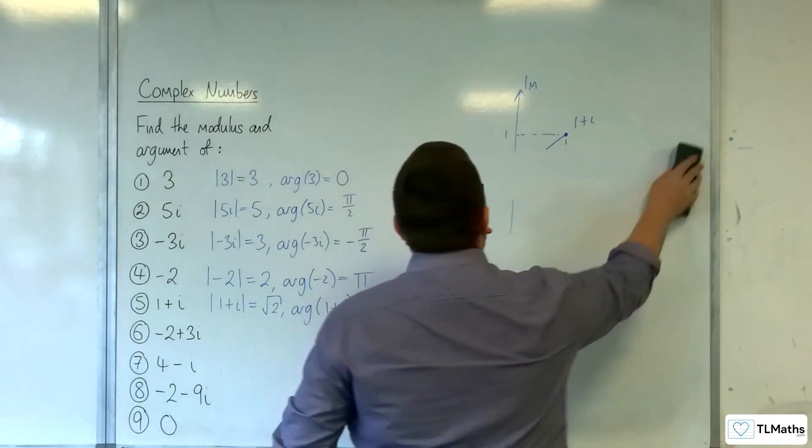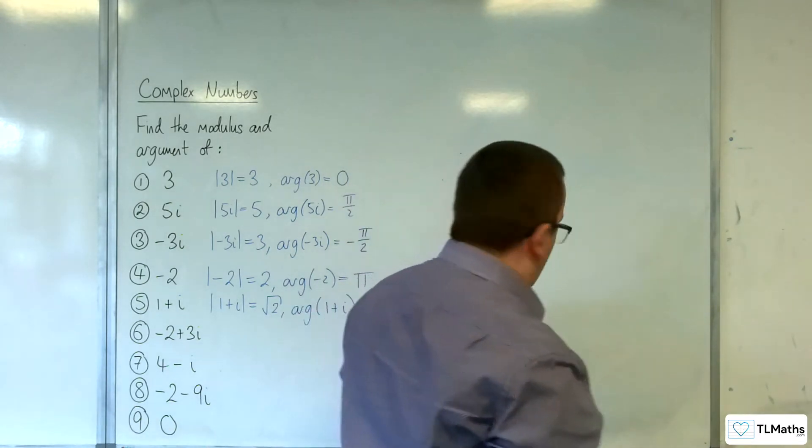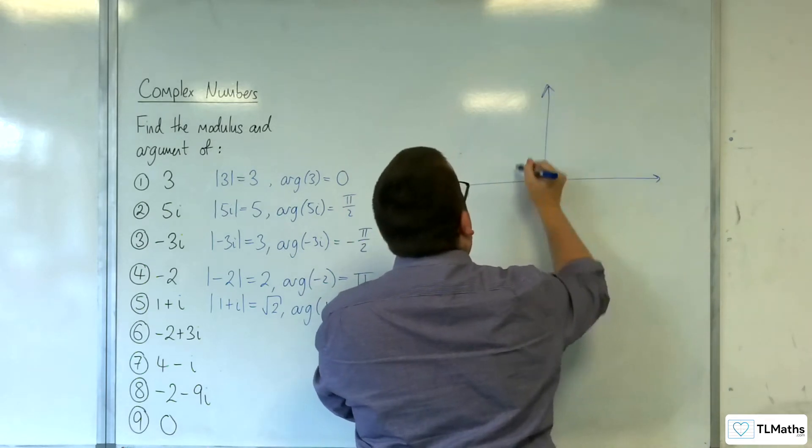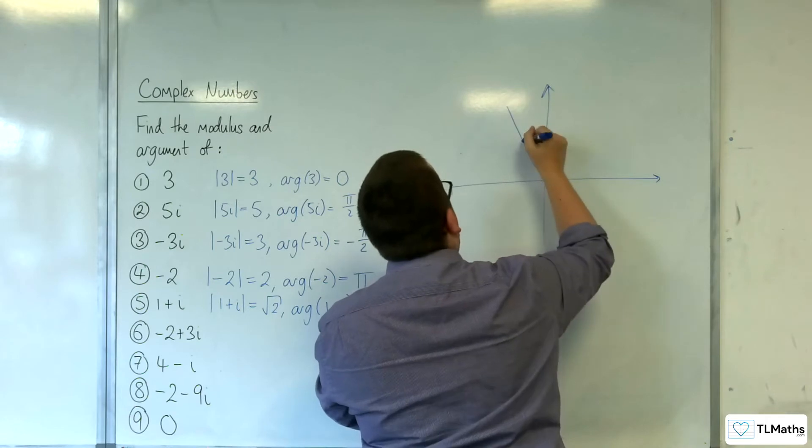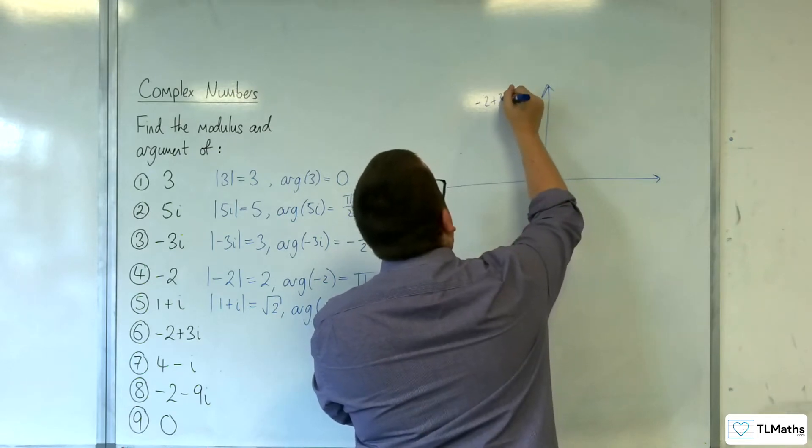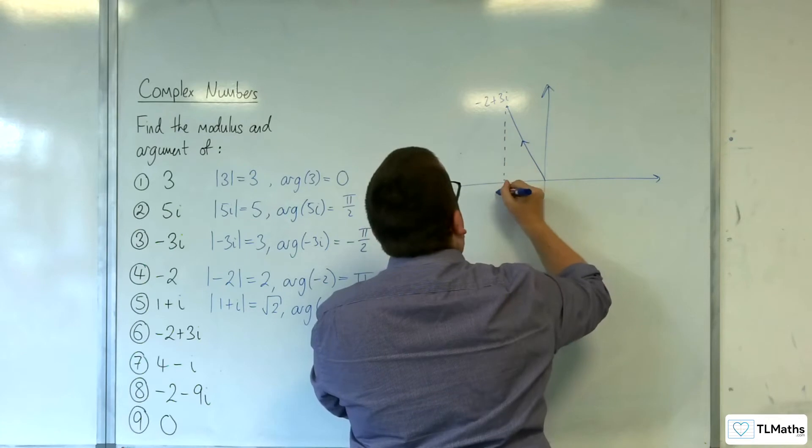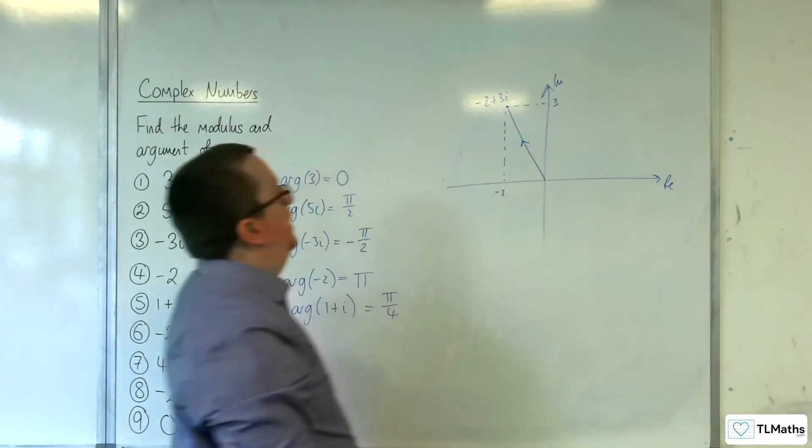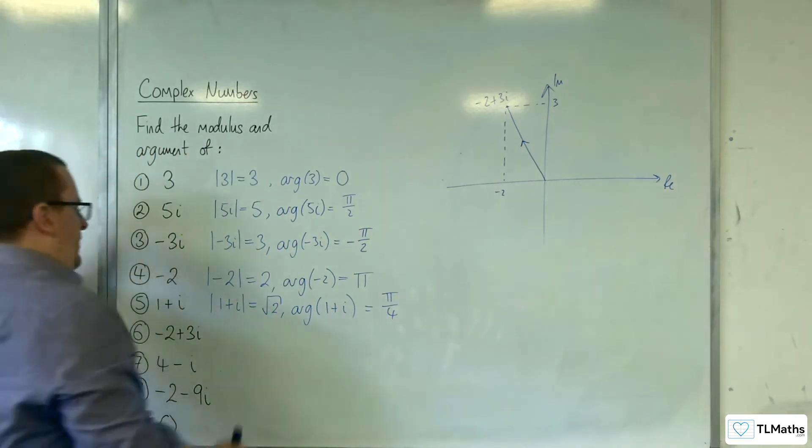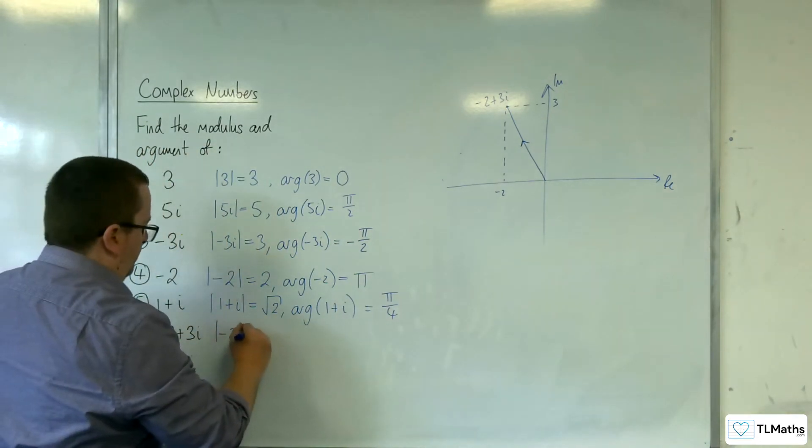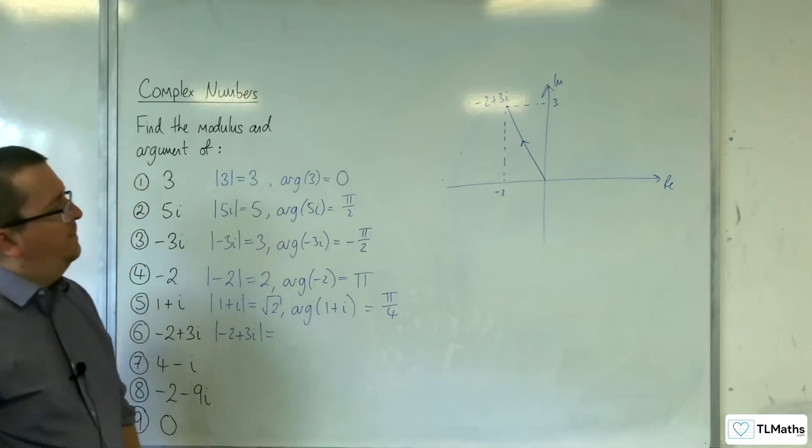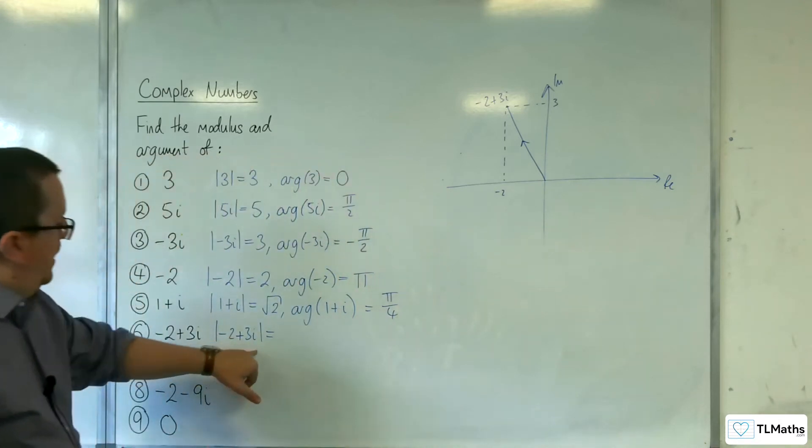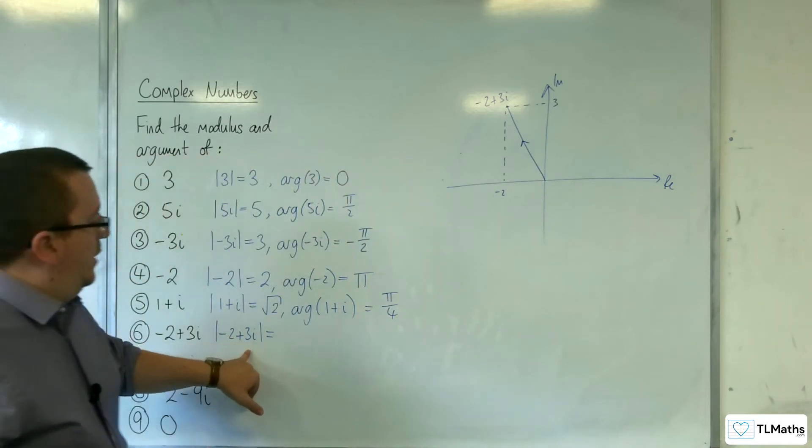Next one. We've got -2+3i. So -2+3i, something like this. That's -2, that's 3 imaginary real axis. So the length, the length of that line segment there, that's the square root of 2² + 3². So root 13.